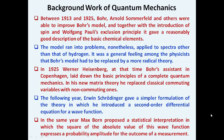Between the years 1913 to 1925, Bohr, Arnold Sommerfeld, and others kept working to improve Bohr's atom model, together with the introduction of spin and Pauli's exclusion principle, giving a reasonably good description of the basic chemical elements. The model says an atom consists of a positively charged nucleus with electrons revolving in fixed circular orbits, each orbit filled with electrons according to Pauli's exclusion principle. Except for the spectra of hydrogen, most phenomena were properly explained by Bohr's atom model.